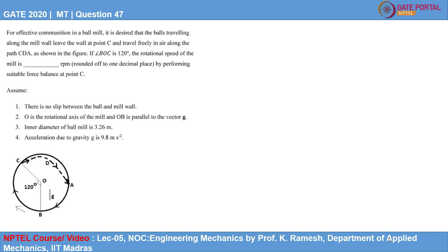O is the rotational axis of the mill, OB is parallel to vector G. Inner diameter of the ball mill is 3.26 meters. Acceleration due to gravity is 9.8 meters per second squared.